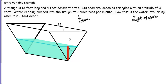The next step is to write down the rates we know and the rates we're looking for. The rate we're given is that water is being pumped into the trough at 2 cubic feet per minute — that's telling us about the volume of water. So dV/dt equals 2, where V represents the volume. The only other rate mentioned is how fast the water level is rising, which is what we're looking for: dH/dt.